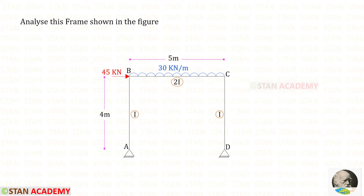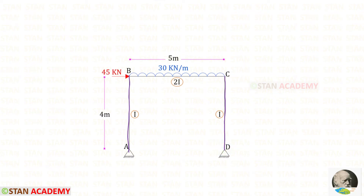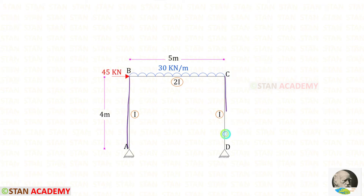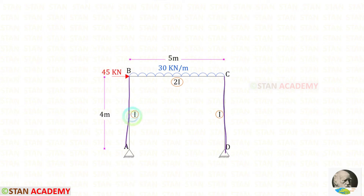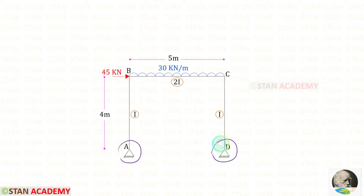Hello everyone. Today we are going to analyze this frame using the consistent deformation method. In this frame there are two columns, column AB and column CD, and also there is a beam BC. In the columns there is no load. In the beam BC we have a uniformly distributed load of 30 kilonewton per meter acting for the full span. In joint B there is a nodal point load of 45 kilonewton acting towards the right side. The height of the columns is 4 meters and the length of the beam is 5 meters. For the columns the moment of inertia is I, and for the beam it is 2I. At points A and D there are hinged supports.